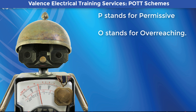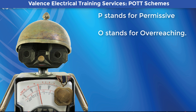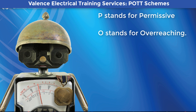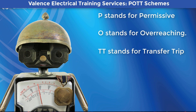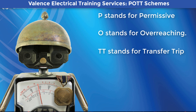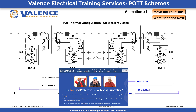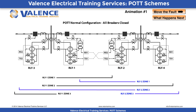The O stands for overreaching. Zone 2's pickup impedance is typically set larger than the protected line, which means that one relay must measure a Zone 2 fault for this scheme to work. TT means at least one relay is sending a transfer trip signal to the other relays in the scheme. You're looking at an animation of a traditional POT scheme that you can find on our website, RelayTraining.com. There should be a link on the screen right now that you can open in a new window if you want to follow along. The link can also be found in the description below.